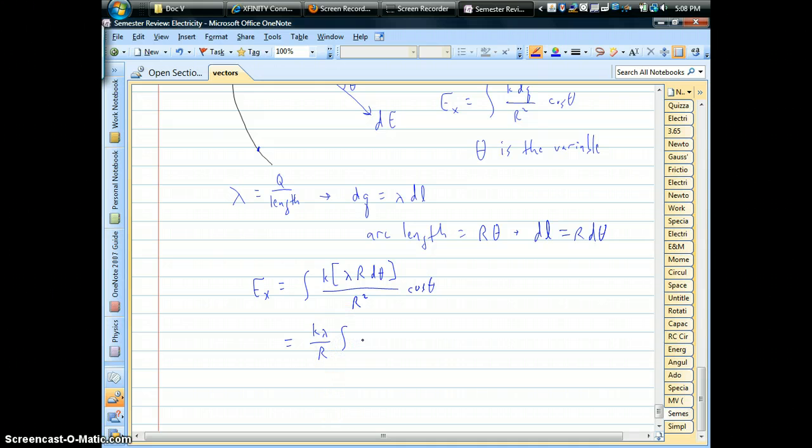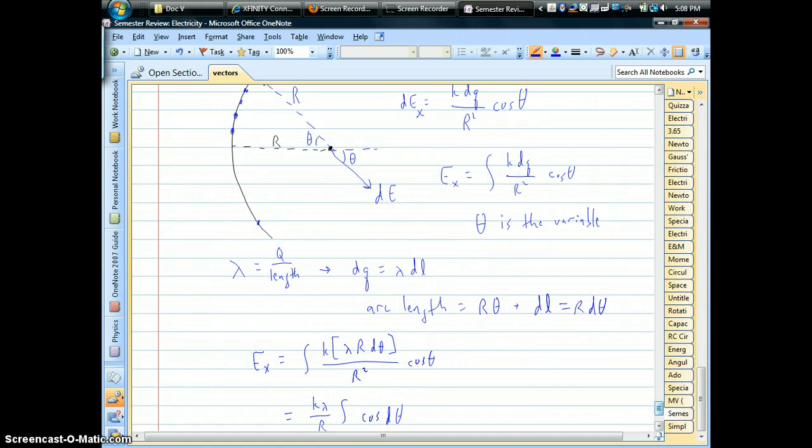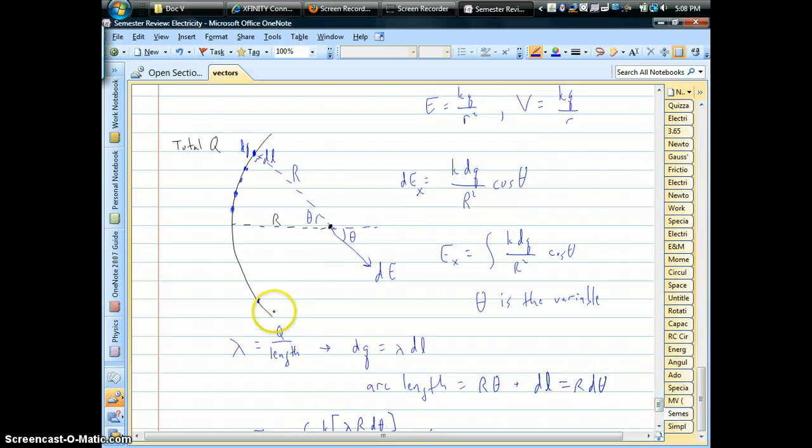And what we're left with is the integral of cosine D theta. The only thing we need on here are from what angle to what angle. We have to do it from one end of our stick to the other end.